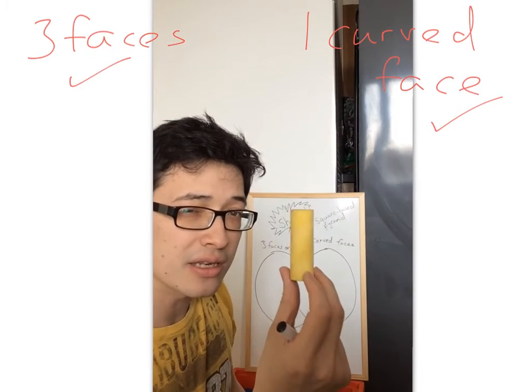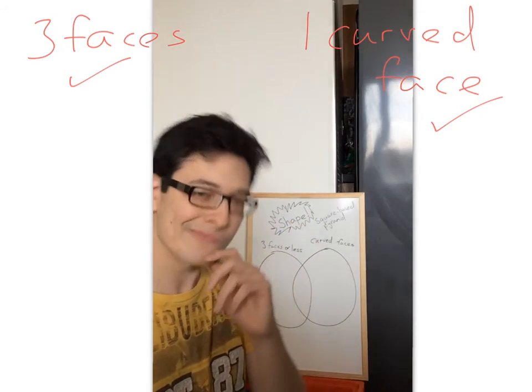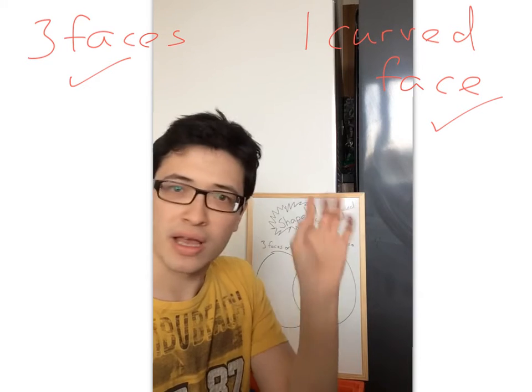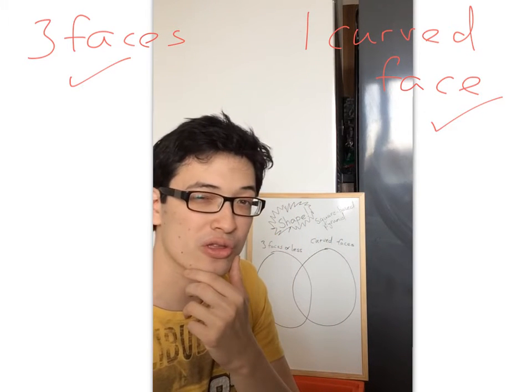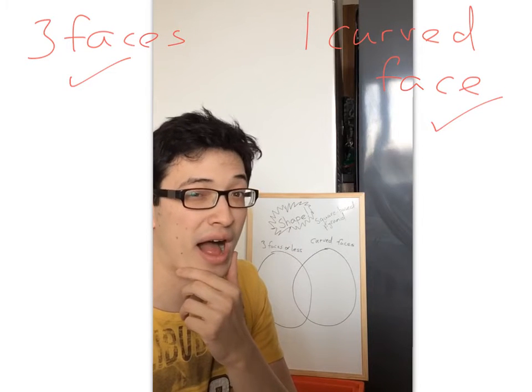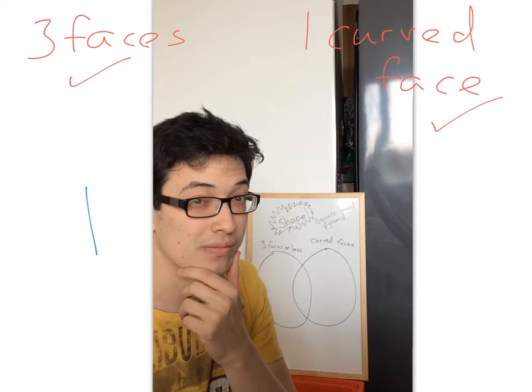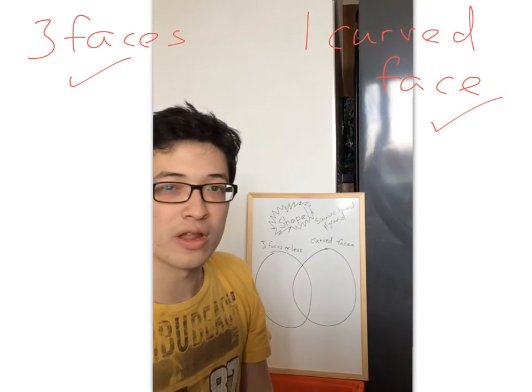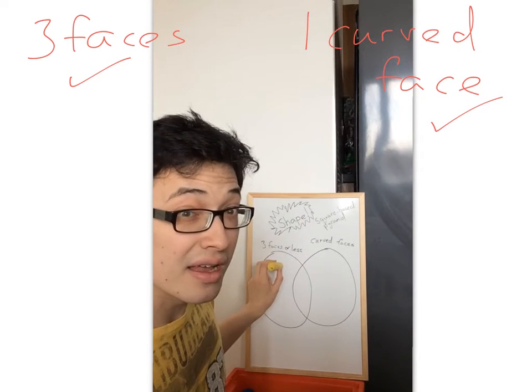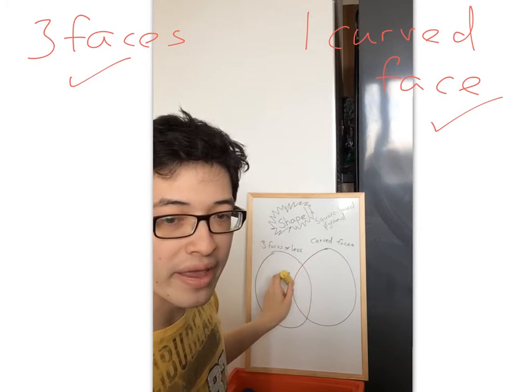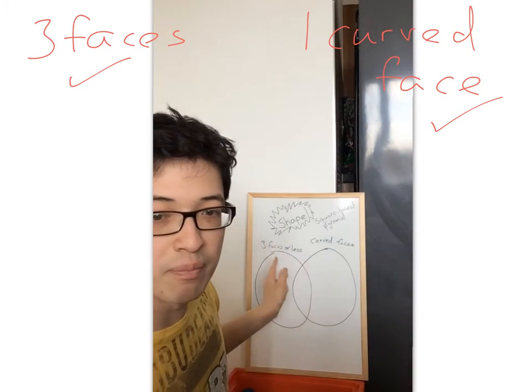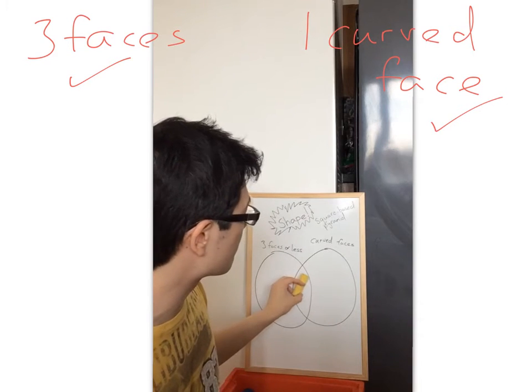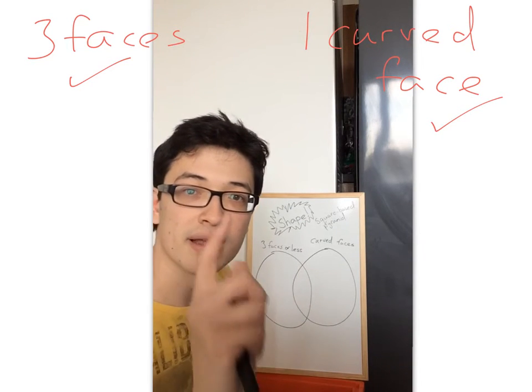So where do you think a cylinder would go in our Venn diagram? Pause, have a think, talk to your partner, and let's see where or not you think. Where it goes is the same where I think it needs to go. Okay, back. So what do you reckon? Do you think it goes here? Do you think it goes here? Do you think it goes here? Or here? Well, a cylinder has both of these things, so that means it needs to go in the middle of our Venn diagram, so it looks a bit like this.